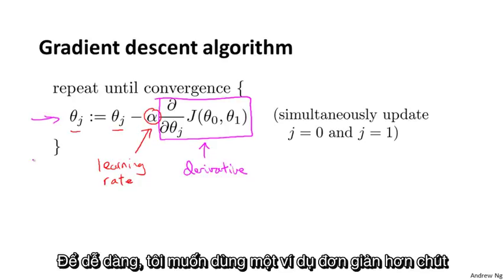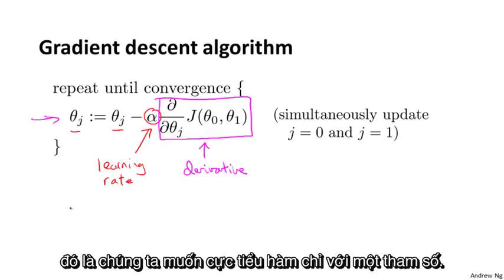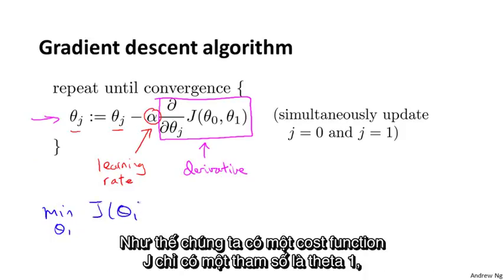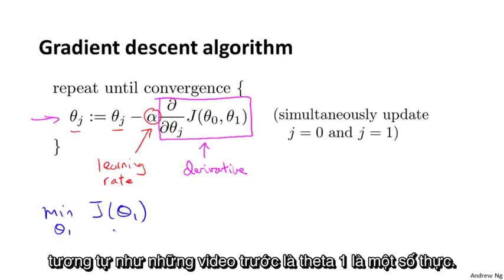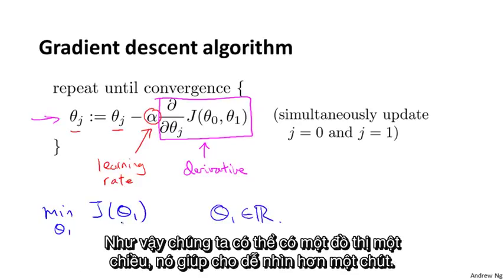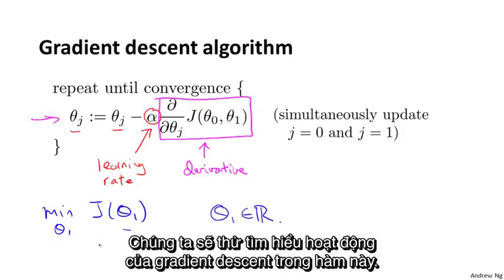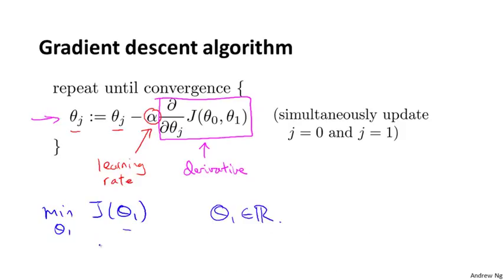In order to convey these intuitions, I want to use a slightly simpler example where we want to minimize a function of just one parameter. So we have a cost function J of just one parameter θ₁, where θ₁ is a real number, so we can have 1D plots which are a little bit simpler to look at. Let's try to understand what gradient descent will do on this function.